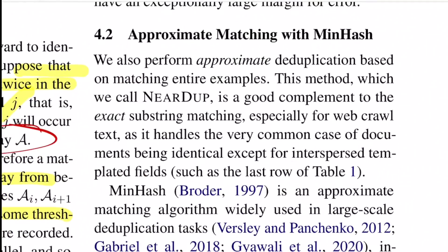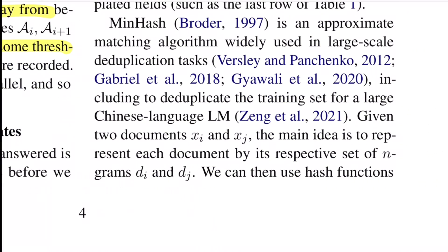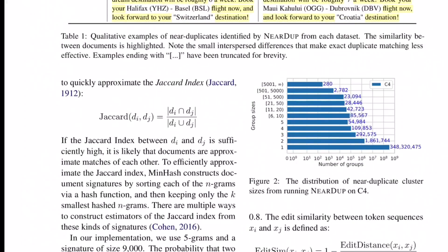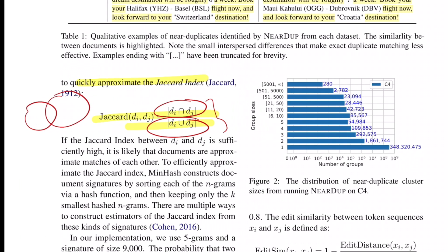The second method is approximate matching with minhash. The idea is to approximate the Jaccard similarity by applying hashing functions. For two documents xi and xj, the first step is to represent every document with its respective set of n-grams, then use hash functions to approximate the Jaccard index. Jaccard similarity measures how similar two sets are: it's the intersection of the two sets divided by their union, which is A plus B minus A intersection B.